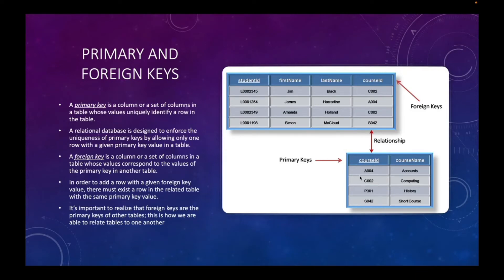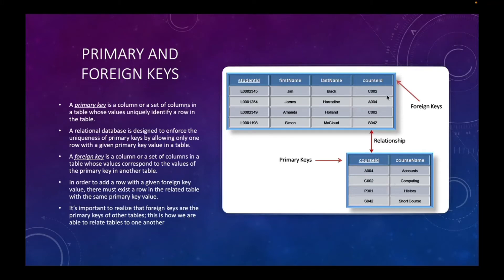A foreign key is a column or set of columns in a table whose values correspond to the primary key values in another table. For example, a student table and a course table are related: the course_id is the primary key of the course table. In the student table, I add a course_id column — which is that same primary key — as a foreign key. Since the student table already has its own primary key (student_id), this course_id becomes the foreign key, connecting the student to the course they're taking.